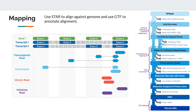After discarding unmapped and low-quality reads, we obtain confidently mapped reads. In the next step, Cell Ranger removes intergenic reads. By default, it includes both exonic and intronic reads. If you do not want intronic reads included, you can use the parameter --include-introns=false when running the count command, in which case intronic reads will also be discarded.